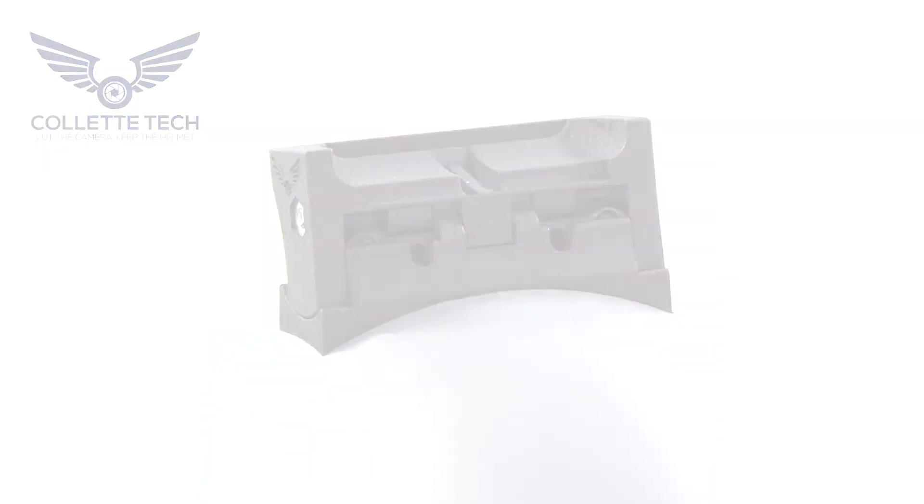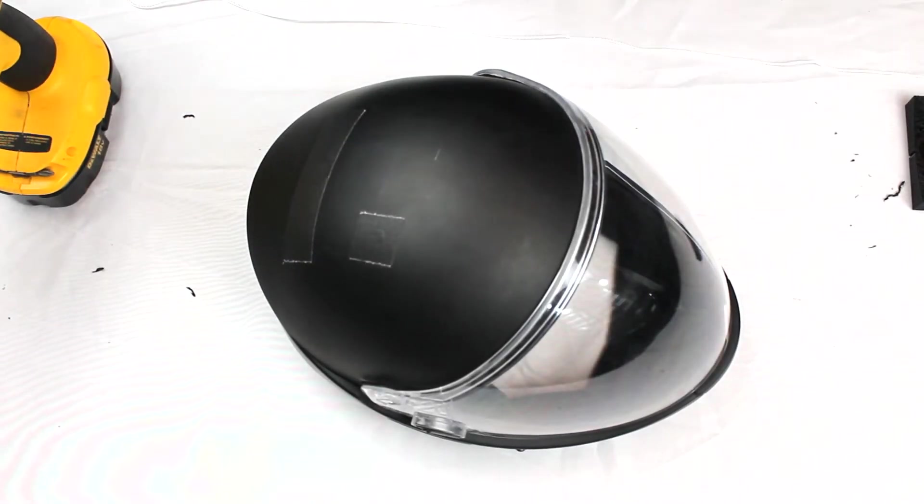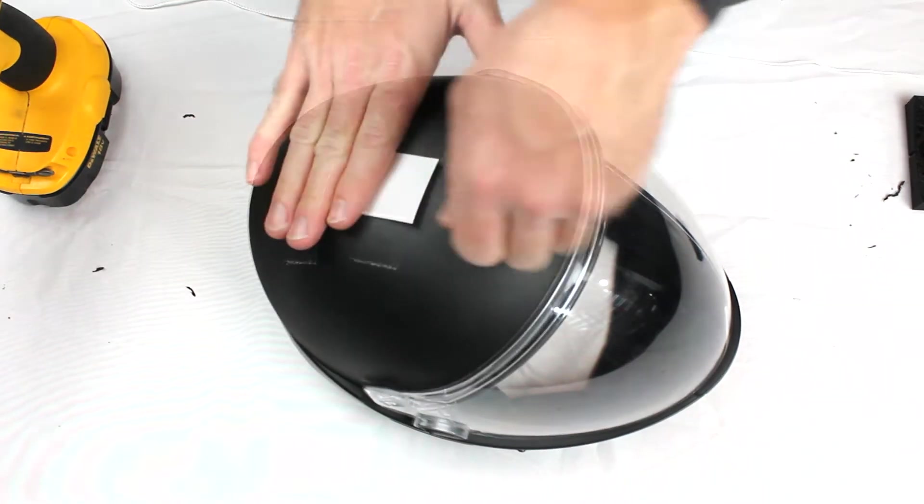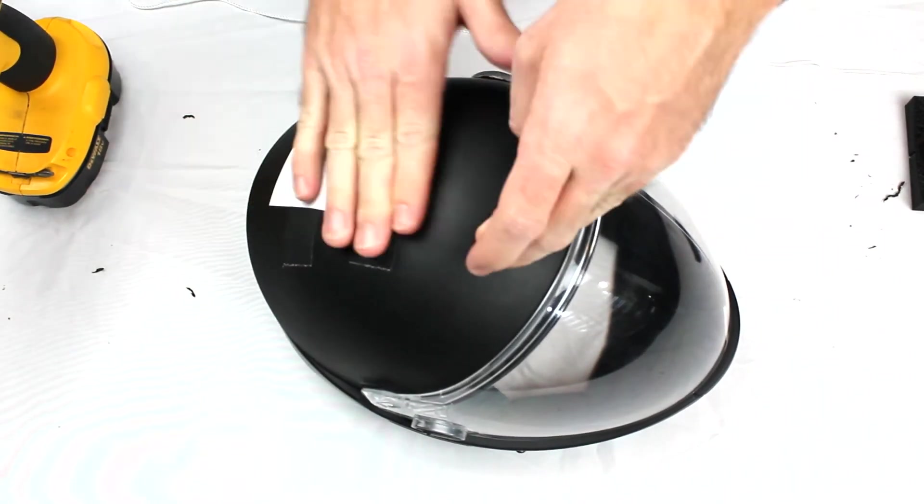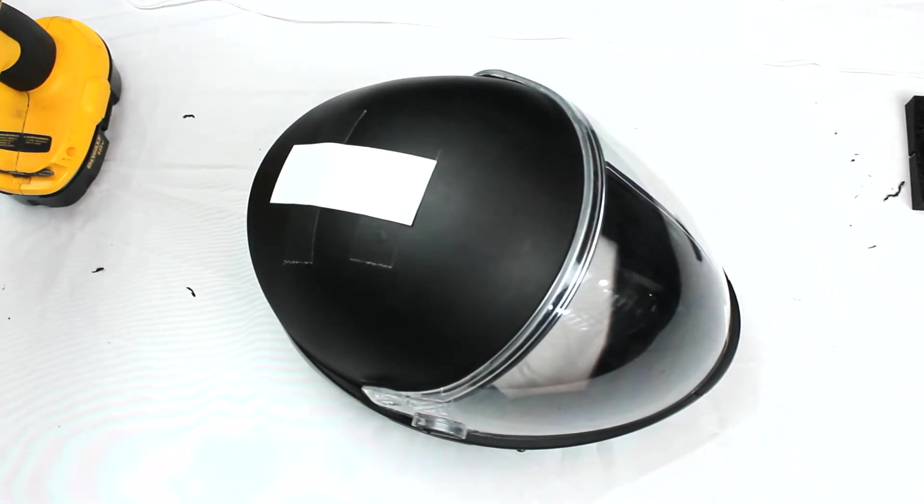To begin, remove the pad from the top of the helmet. Mark the mount placement by starting with the visor closed. Place the removable adhesive template as close to center as possible.